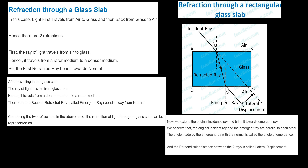After travelling through the glass slab, the ray of light travels from glass to air. When it enters from glass to air, you can observe the ray is moving away from the normal. When light travels from denser medium to rarer medium, the light bends away from the normal. The same thing we can see here — this ray we call as the emergent ray.